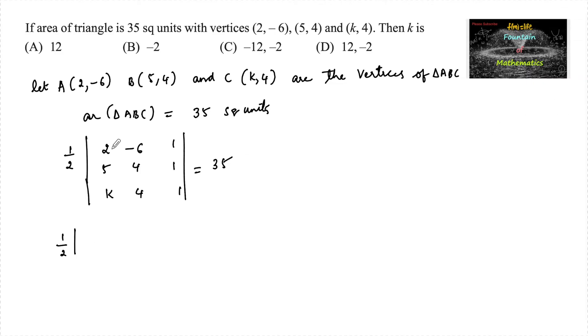Let us expand using the first row plus minus plus. So 2 times the determinant by deleting this row and column, so we have 4, 1, 4, 1, that is 4 minus 1 into 4, 4 minus 4.